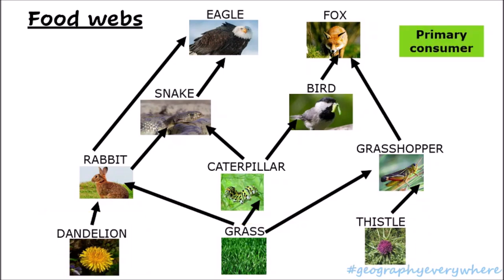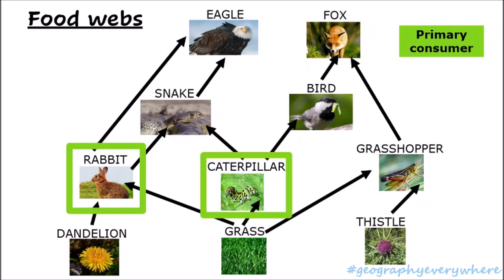We also mentioned the primary consumer. In our food chain before, the caterpillar was the primary consumer. The primary consumer is the consumer that eats the producer. In this case, we have the rabbit, who's eating the dandelion and the grass; the caterpillar, who eats grass; and the grasshopper, who is eating grass and thistle.